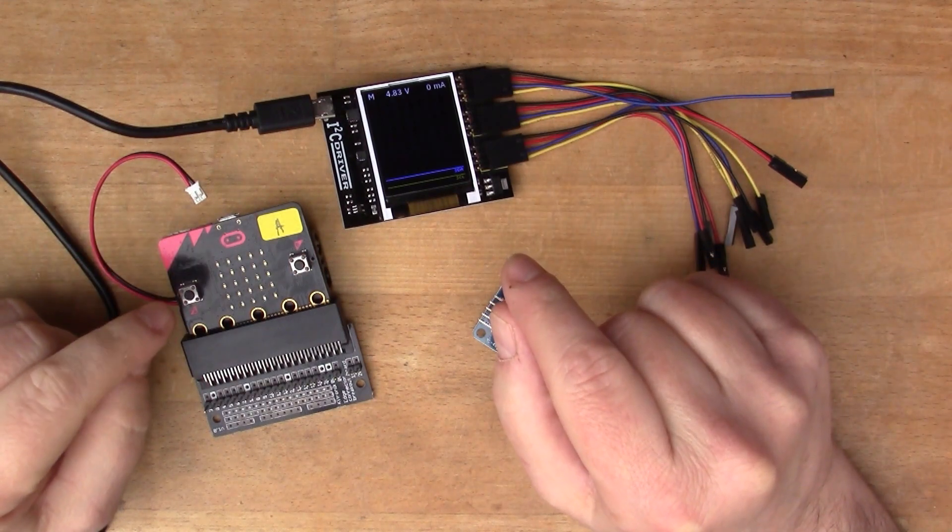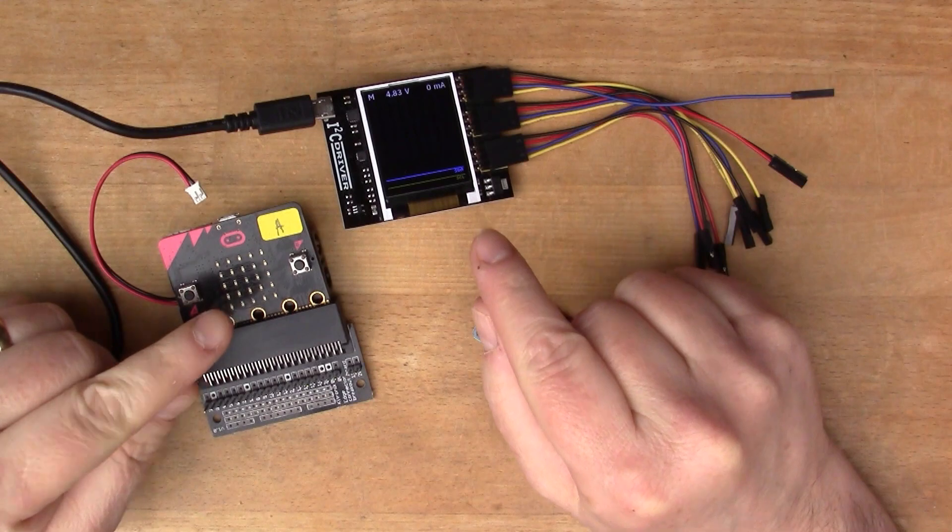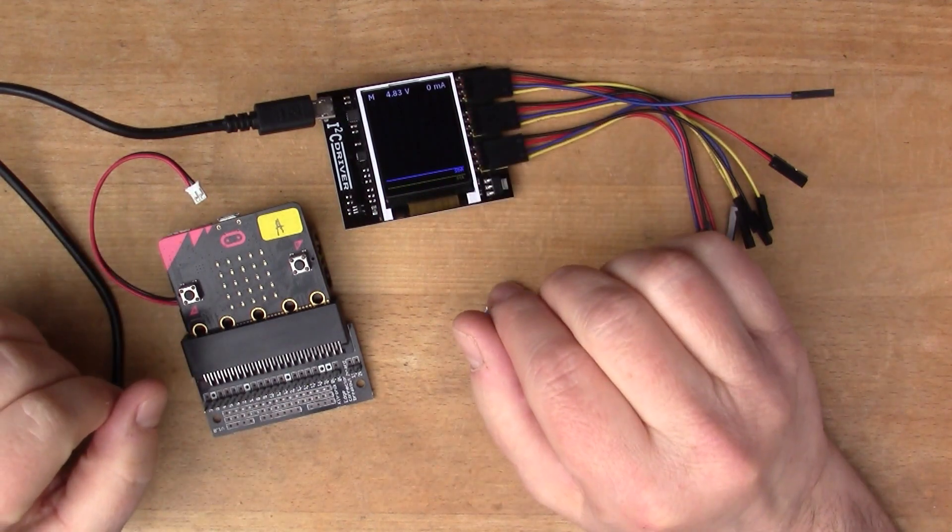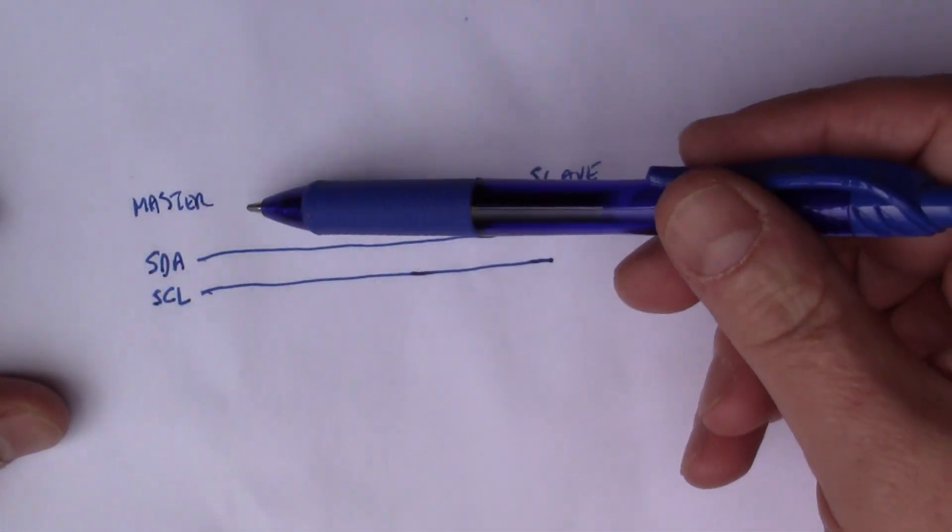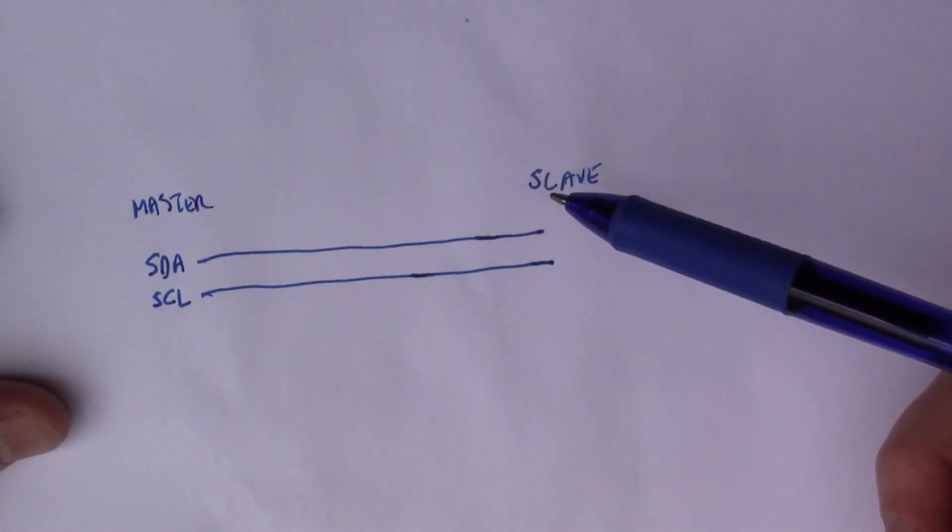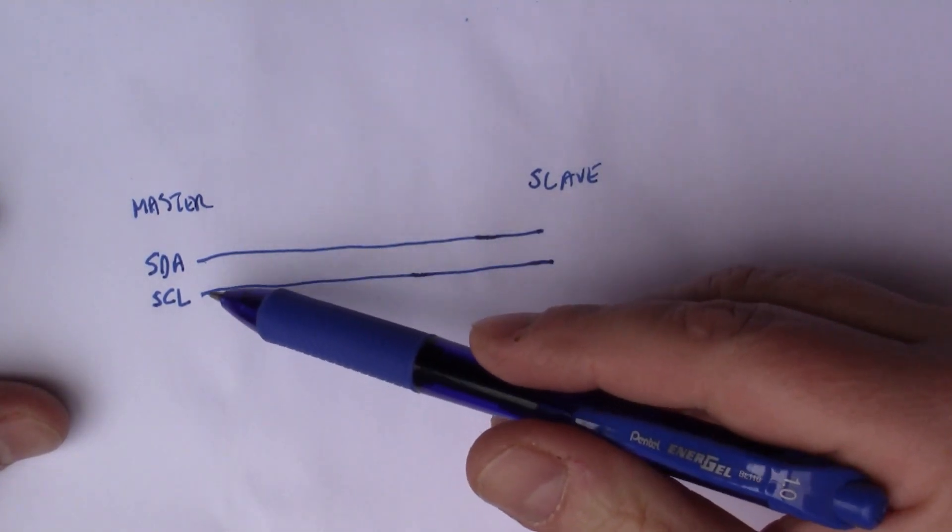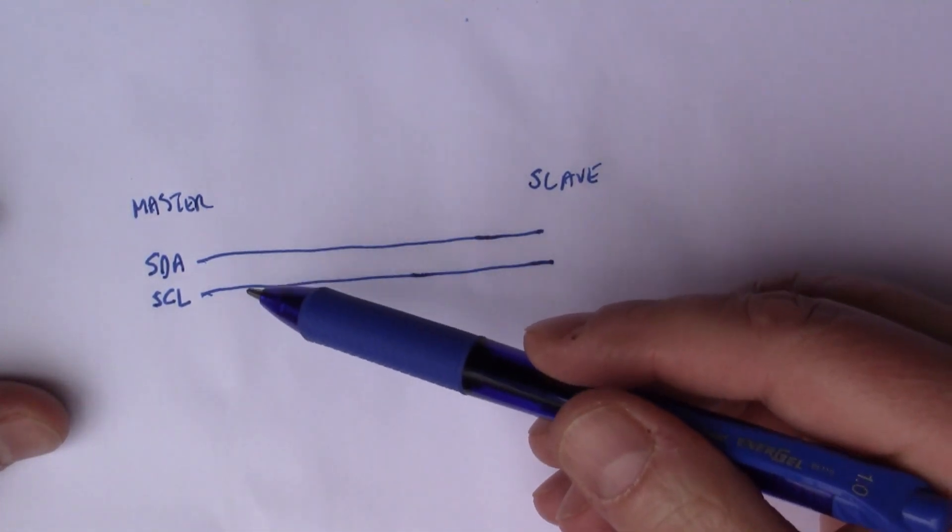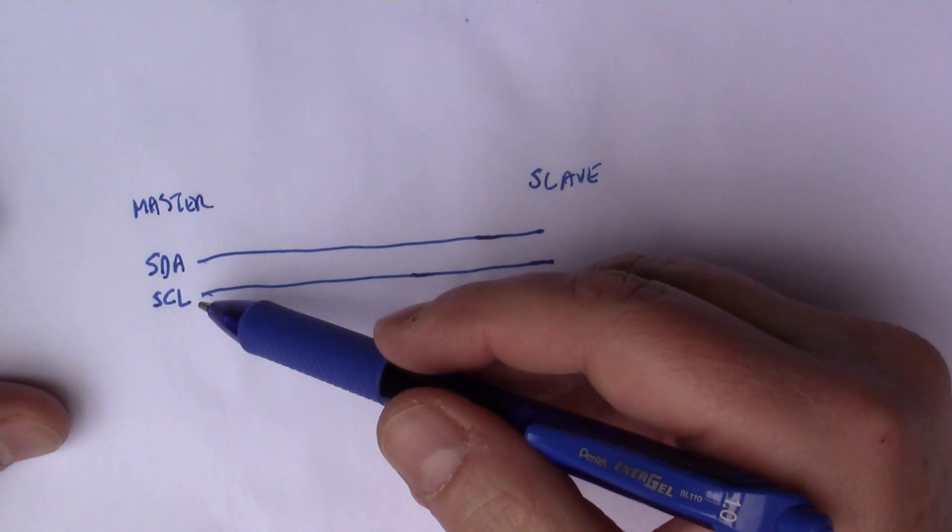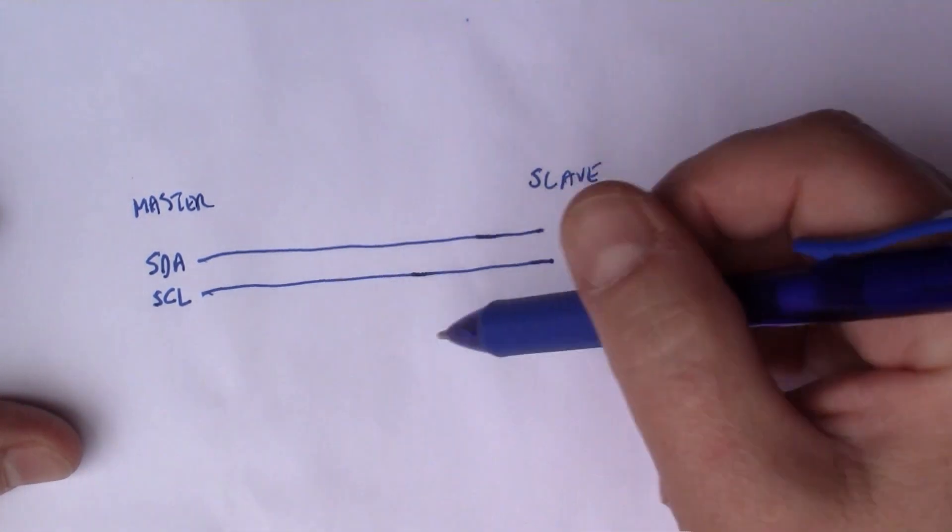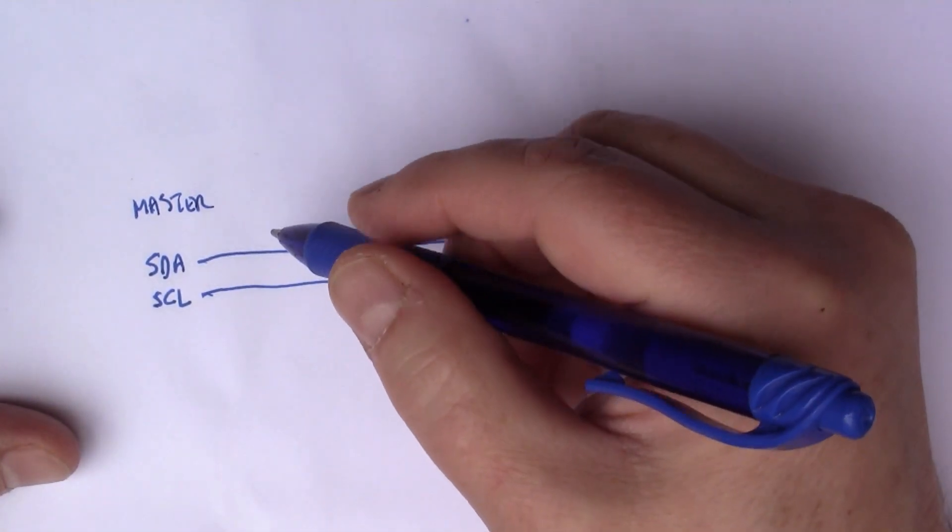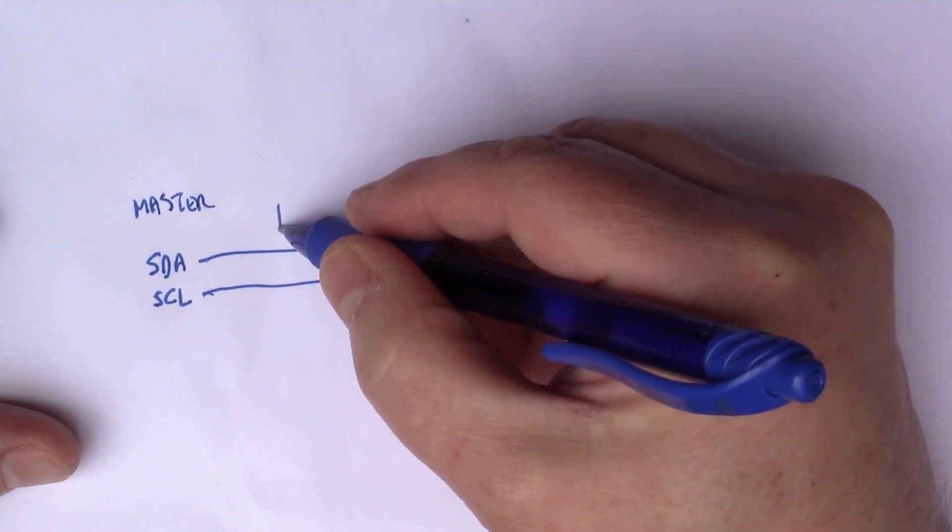Let me talk about active pull-ups and whether this is an active or passive device. On the I2C bus, you've got a master and typically multiple slaves. Forgetting about the power wires, the five volts and ground, the main important lines are SDA which is the data connection and SCL which is the control connection.